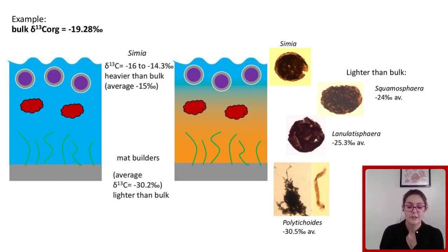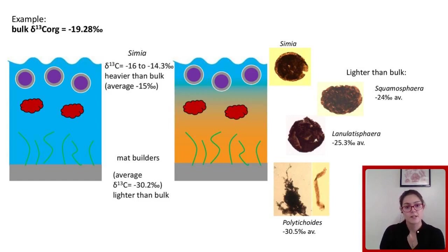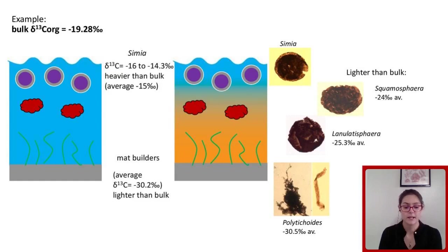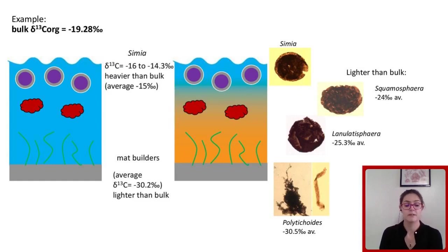Going back to the question about early eukaryote ecology — where they lived — looking at a water column cartoon: we know that mat-builders, or squiggles, live at the bottom. In this example they're much lighter than bulk organic carbon, around minus 30 per mil. In the same sample, a eukaryote like Simia is very enriched, minus 15 to minus 14 per mil, suggesting it incorporated its carbon in enriched surface waters. Some other common eukaryotes like Linolatosphaera or Squamosphaera are also offset from the bulk but a bit more depleted, so it is less likely those lived at the surface. This suggests single-celled eukaryotes inhabited different parts of the water column.